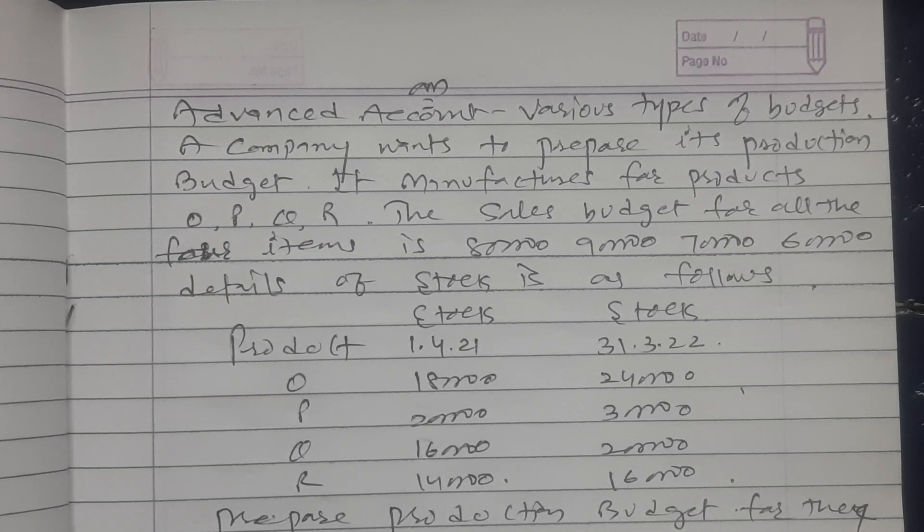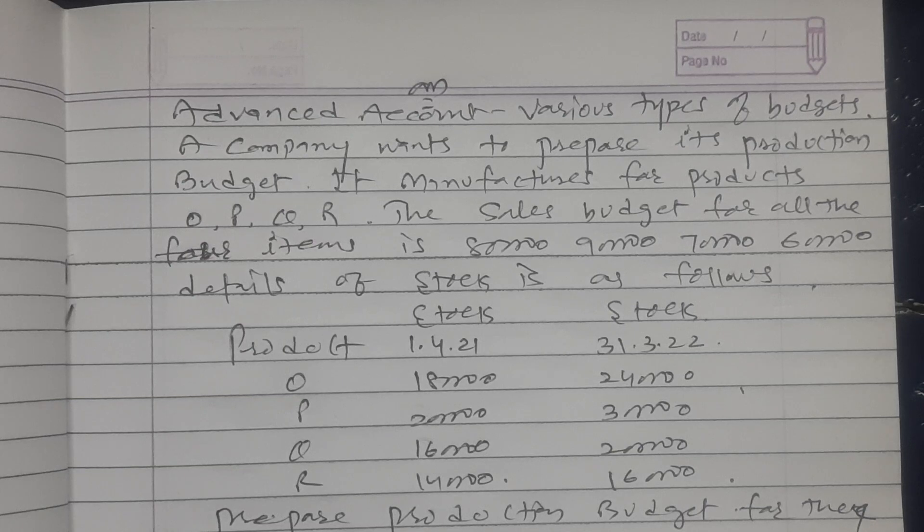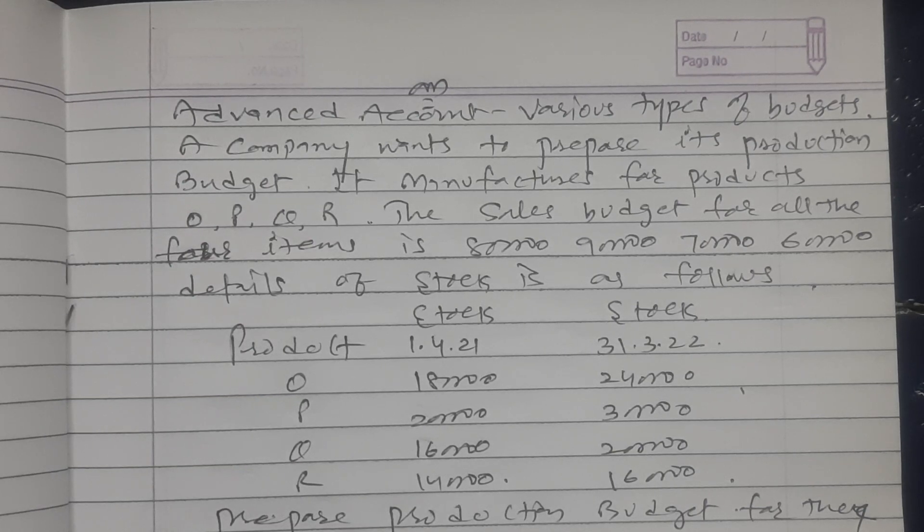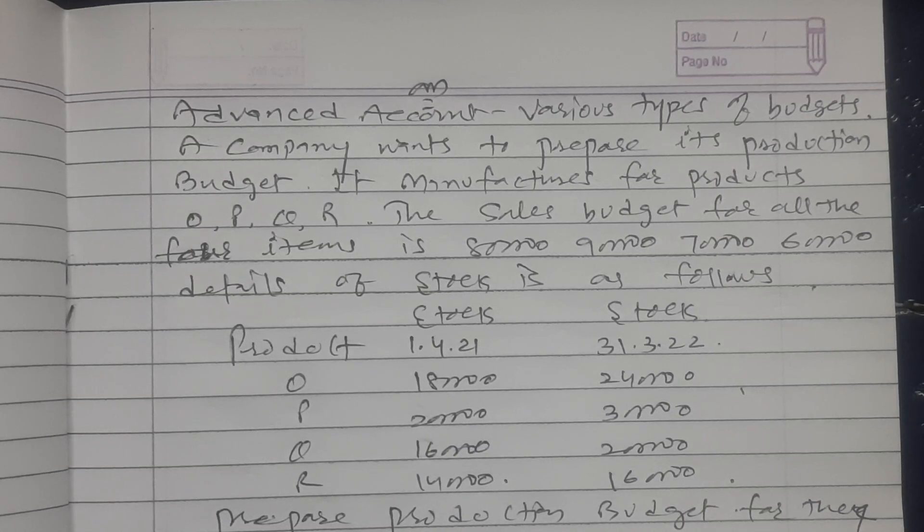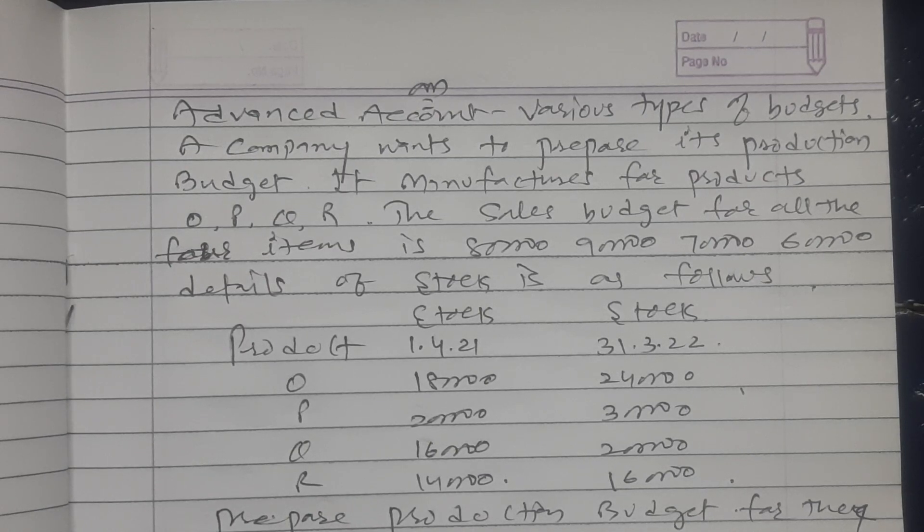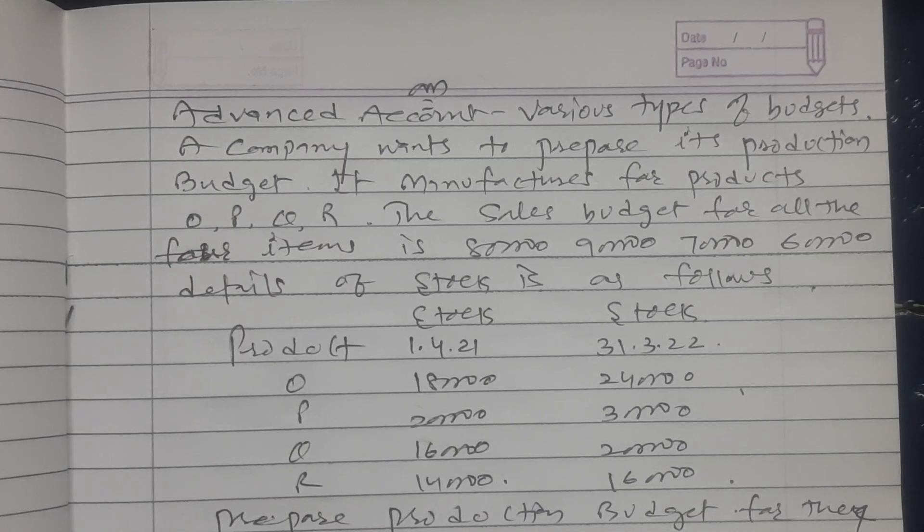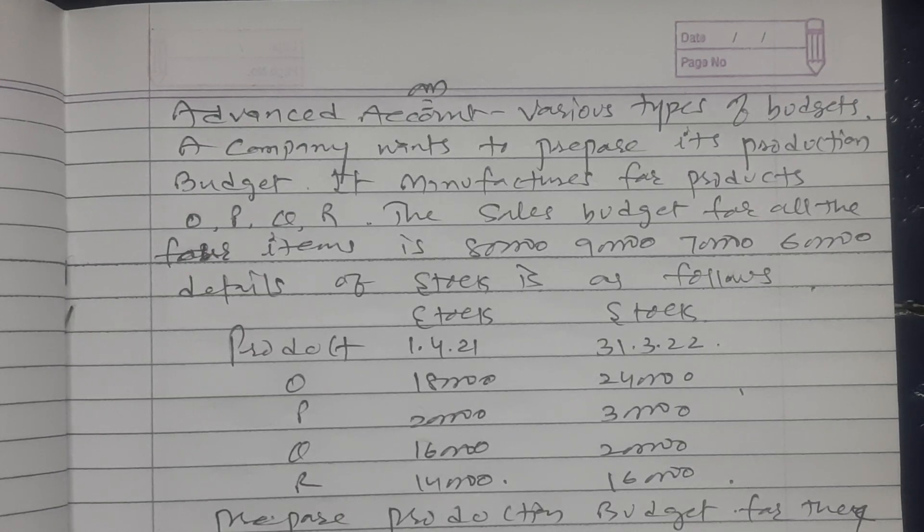Opening stock of O is 1 lakh 80 thousand, P is 2 lakh, Q is 1 lakh 60 thousand, and R is 1 lakh 40 thousand. Closing stock: O is 2 lakh 40 thousand, P is 3 lakh, Q is 2 lakh, and R is 1 lakh 60 thousand. It has been said prepare production budget for the year 2022-23.